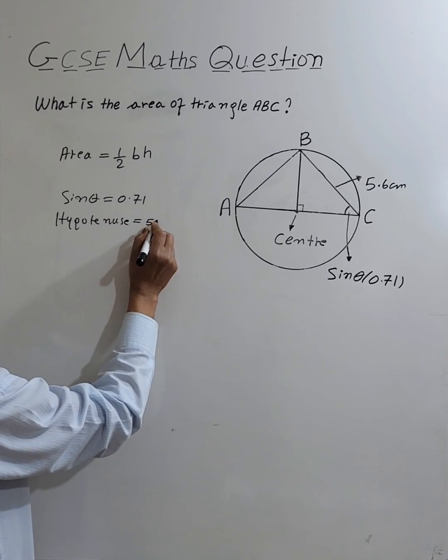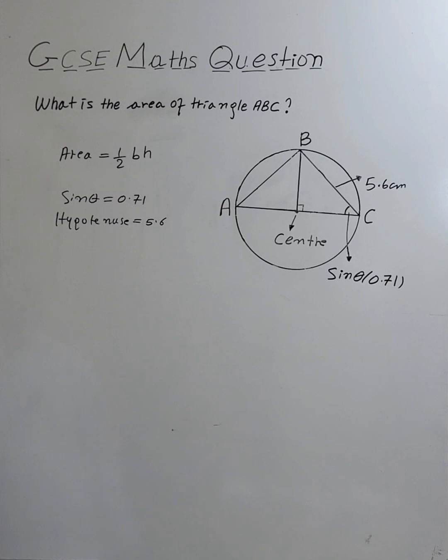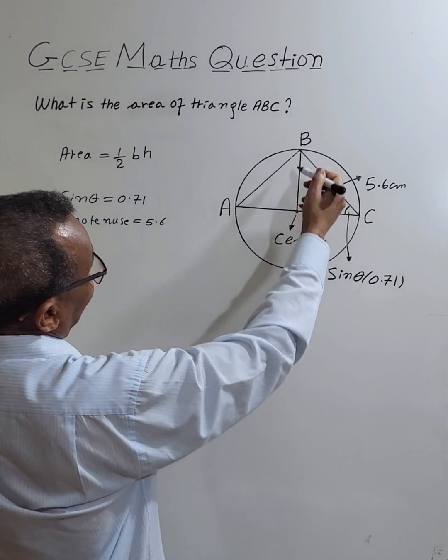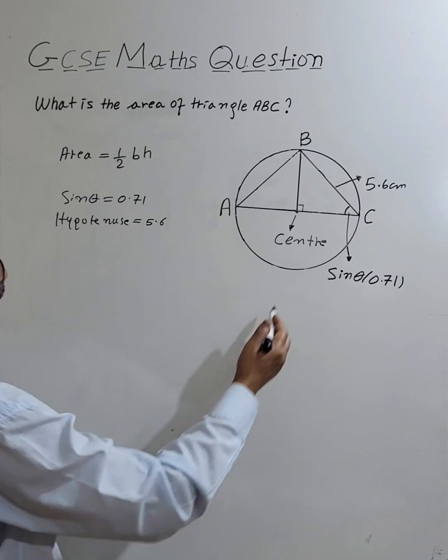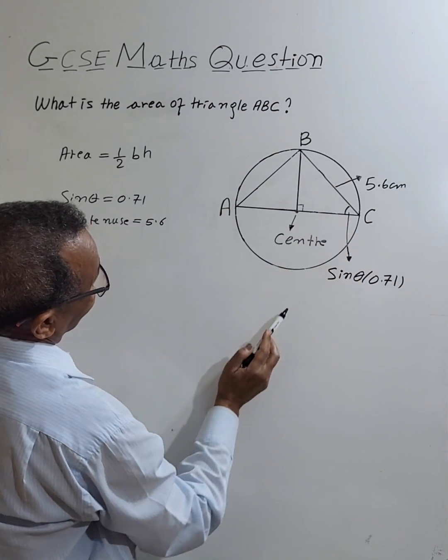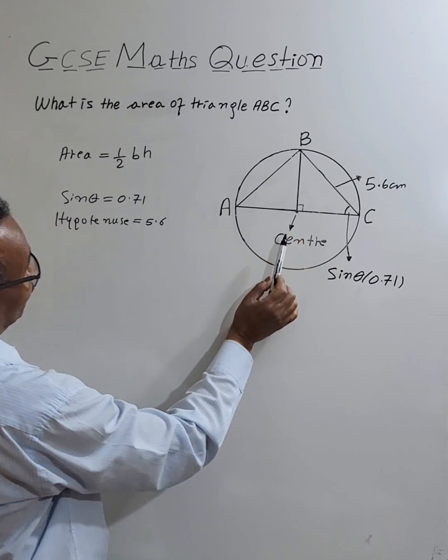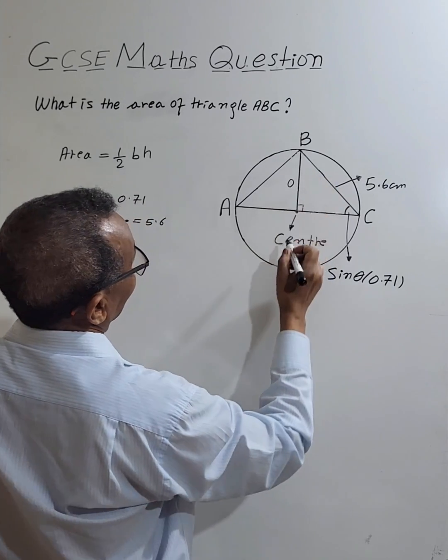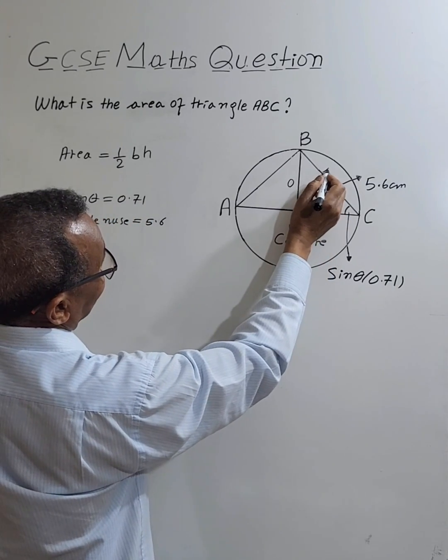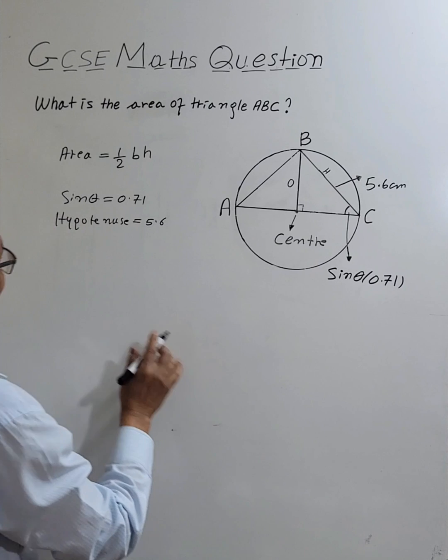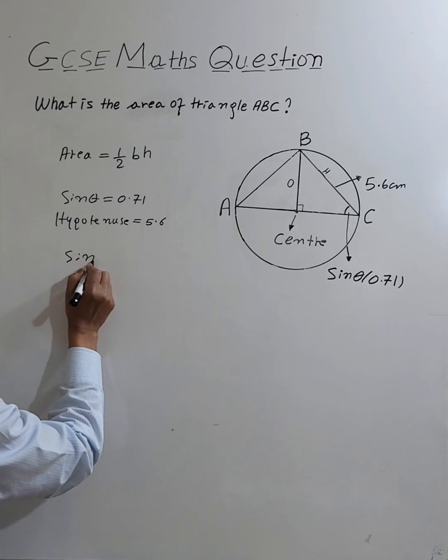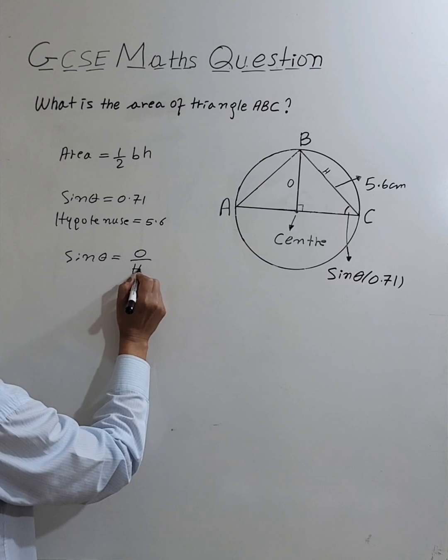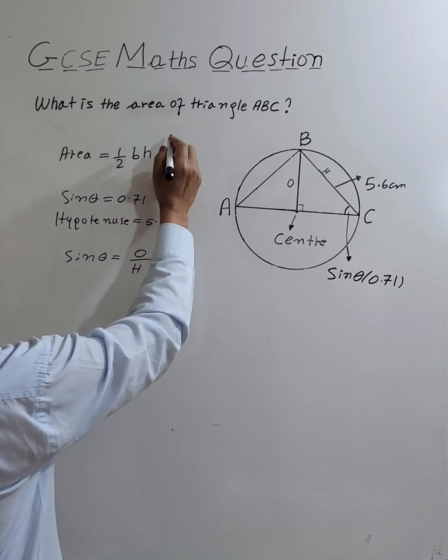Using this information we can find the height of the triangle. So let's label the right angle triangle. This side is opposite to the given theta, we mark with O, and this one is hypotenuse. So sine theta equals the opposite over hypotenuse. Remember the word SOH CAH TOA.